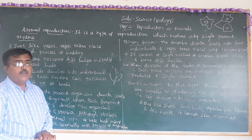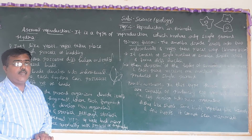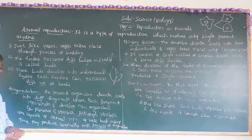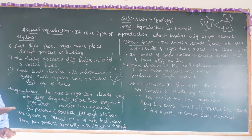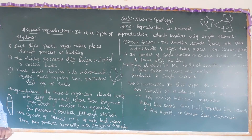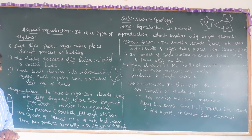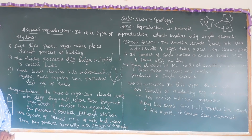Another type of asexual reproduction is fragmentation. In fragmentation, the parental organism divides itself into different fragments. These fragments can be cut into three or four parts. For example, if you cut an organism like planaria into three parts, each can develop again — this is called regeneration.